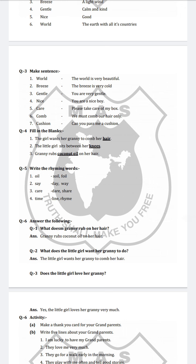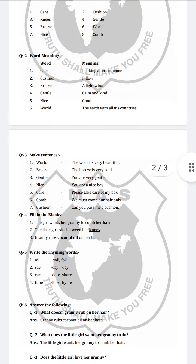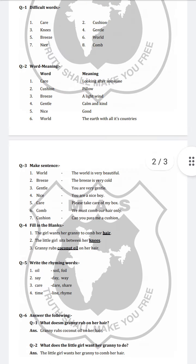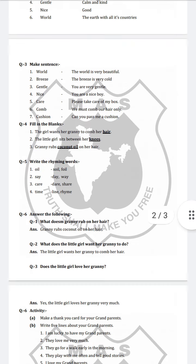Now question number 4 is fill in the blanks. First: the girl wants her granny to comb her hair. Second: the little girl sits between her knees. Third: granny rubs coconut oil on her hair.